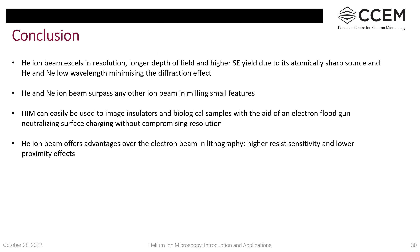To conclude: helium ion beam excels in resolution, longer depth of field, and higher secondary electron yield due to its atomically sharp source. Helium and neon have low wavelength compared to electrons, minimizing diffraction effects. Helium and neon ion beams surpass other ion beams for milling small features. Helium can image insulators and biological samples without coatings using the electron flood gun, and helium ion beam lithography offers advantages over electron beam lithography including higher resist sensitivity and minimal proximity effects.